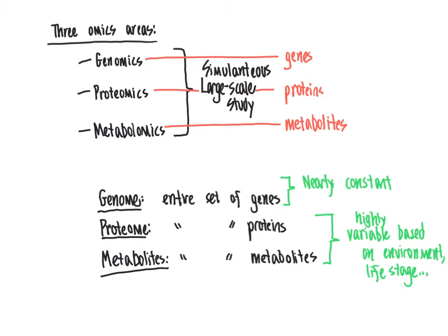The only exception to genome constancy is during cell division, if a mutation event of DNA occurs that could alter a gene during the course of an organism's life. But for the most part, the genome is relatively constant, while the proteome and metabolome are much more variable. We can use these tools of genomics, proteomics, and metabolomics to establish differences between populations of organisms or between treatment and control groups.